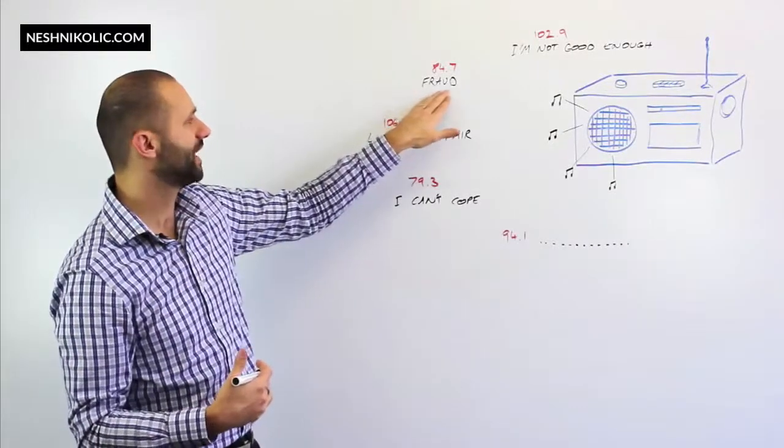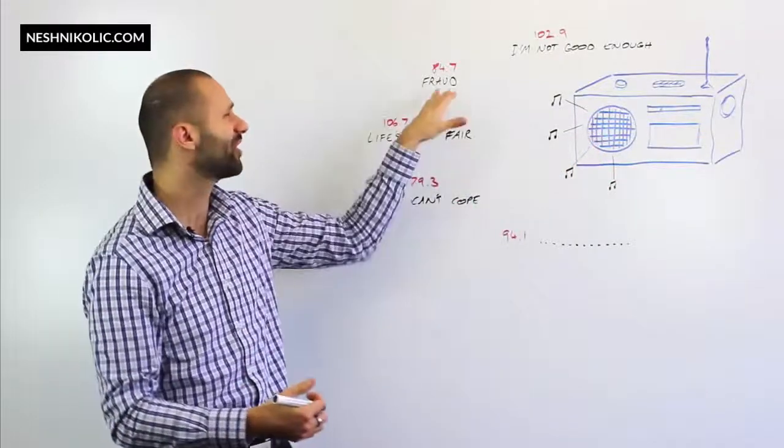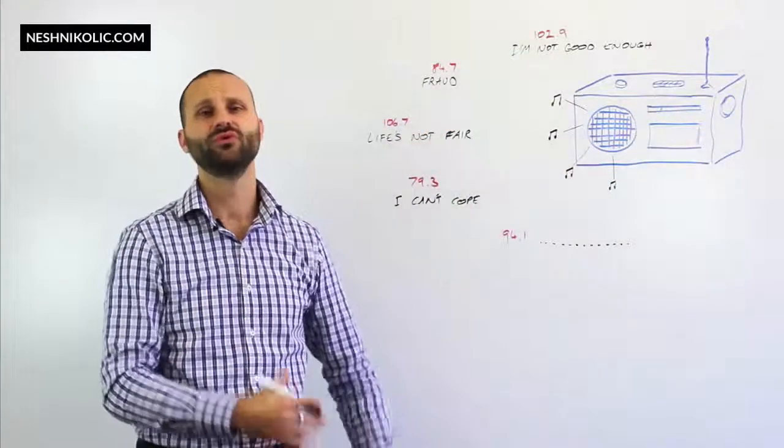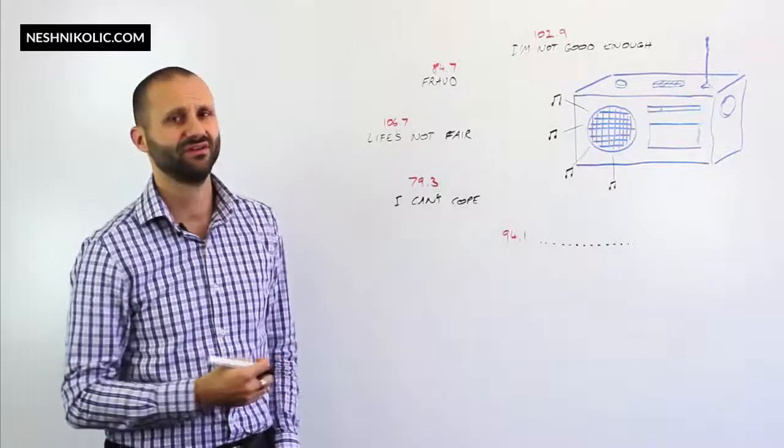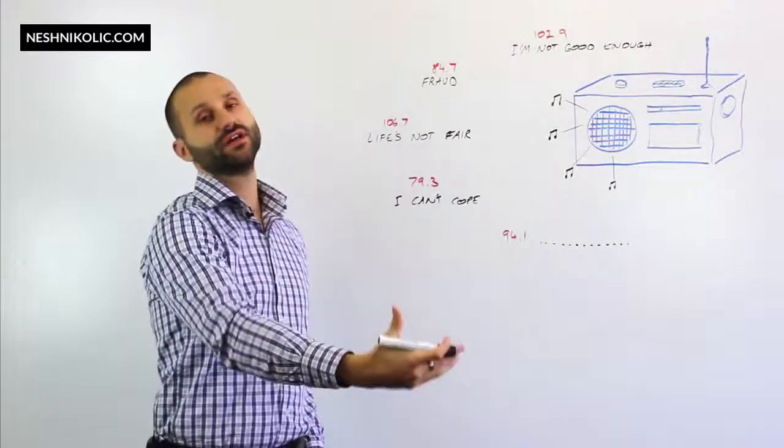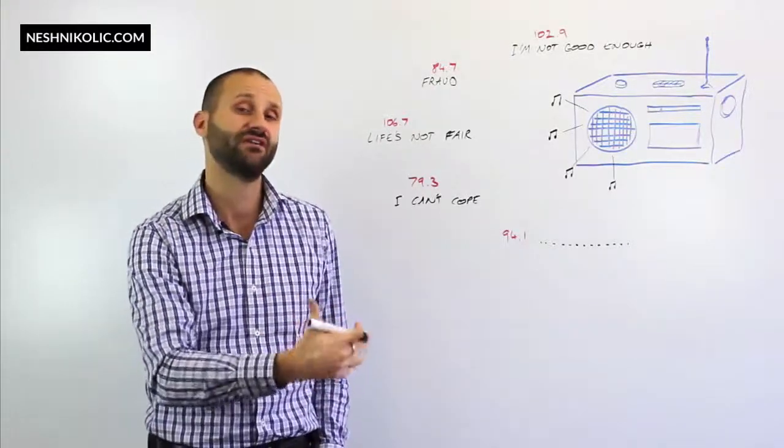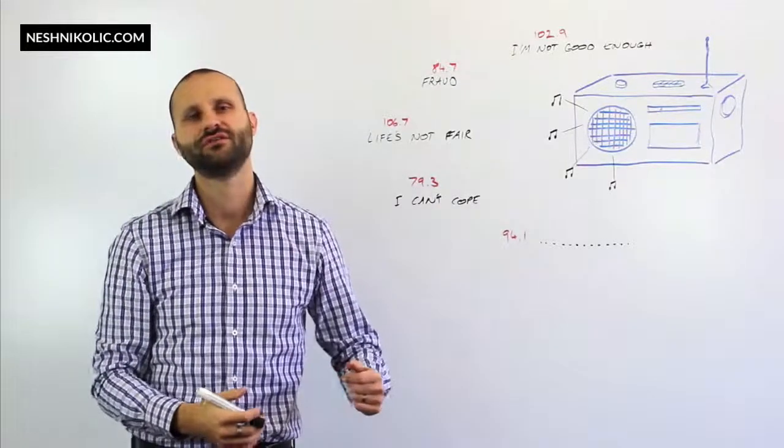And it might be, fraud might actually be, I want to be connected. That might be the value behind that. So it's not going to turn off. The fraud station is not going to turn off. I'm not good enough might be about being close with a parent, for example. And that's unlikely to just turn off either.